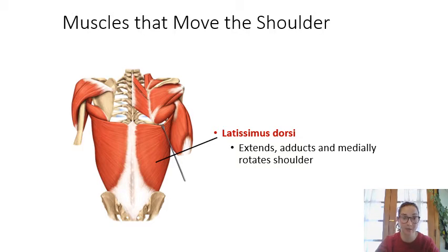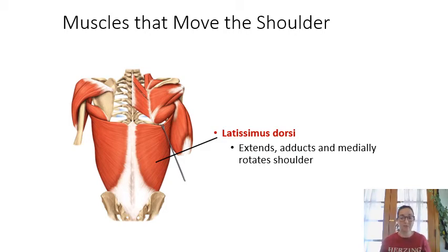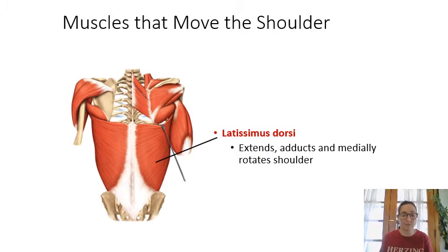Further down the back, we find latissimus dorsi — the lats. Found on either side of the body, the lats can medially rotate the shoulders (turning them inward), adduct the arm (bring it toward the body), and extend the arm (pull it backward).